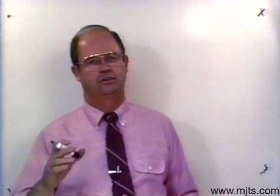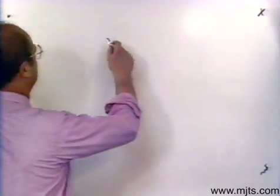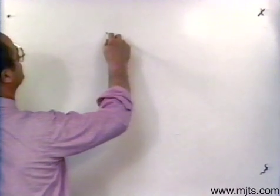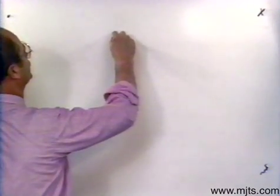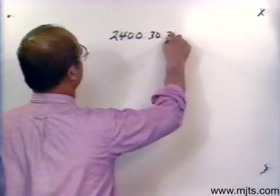Now let me give you some typical three-phase systems. Probably the lowest distribution voltage you're going to find is going to be 2400, three-phase, three-wire.